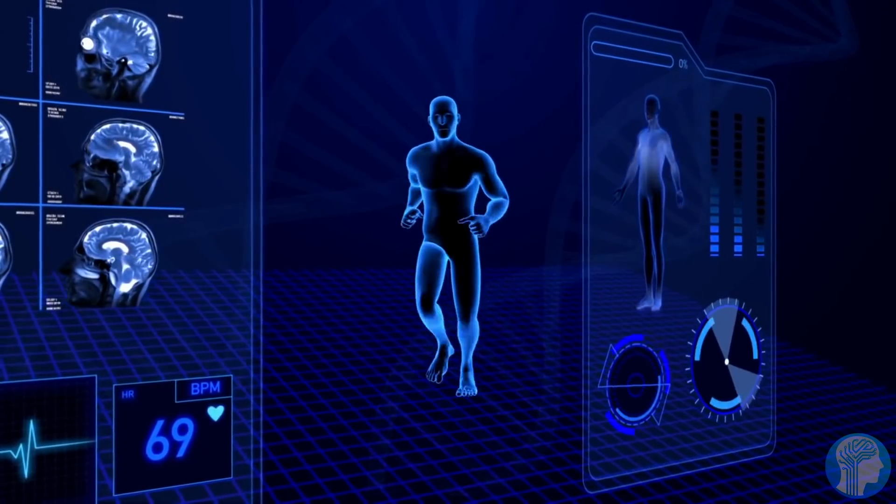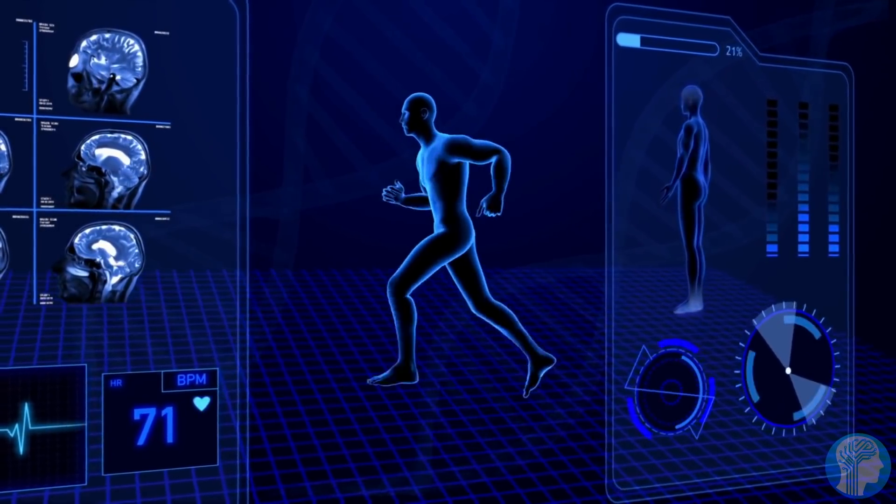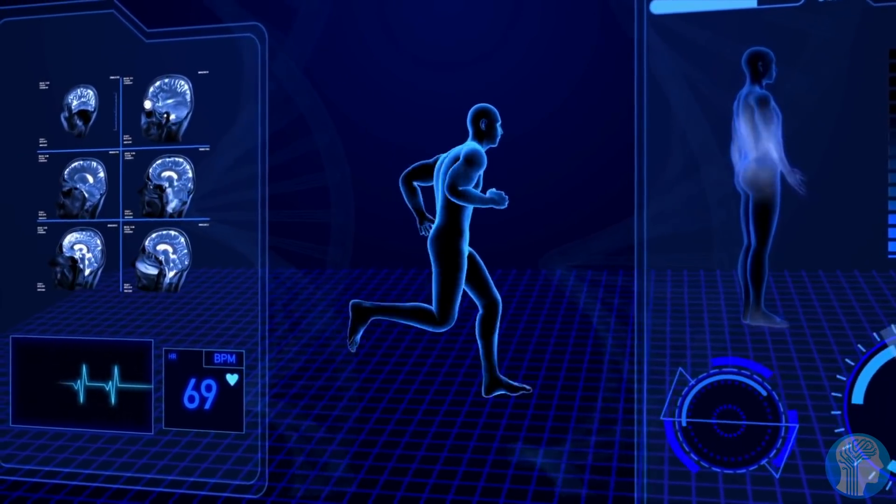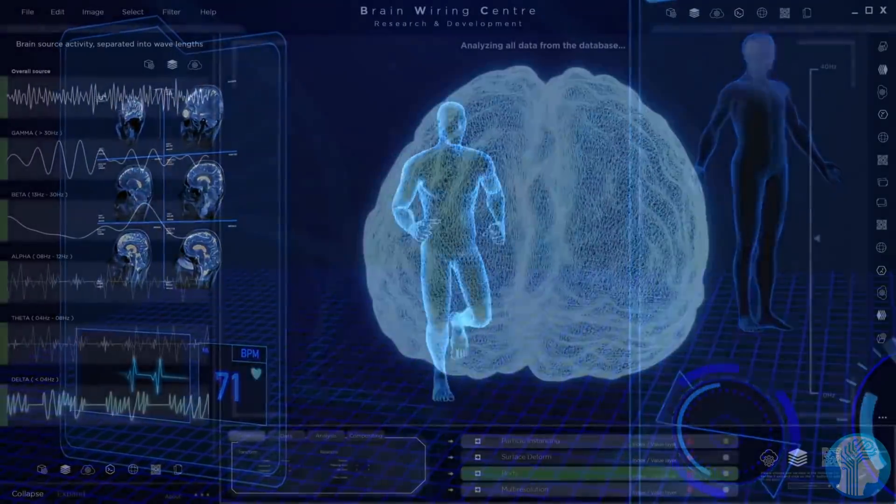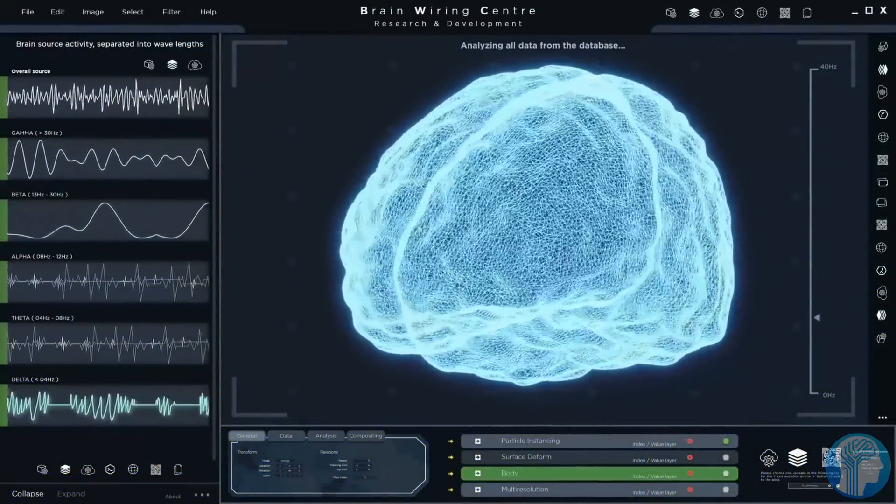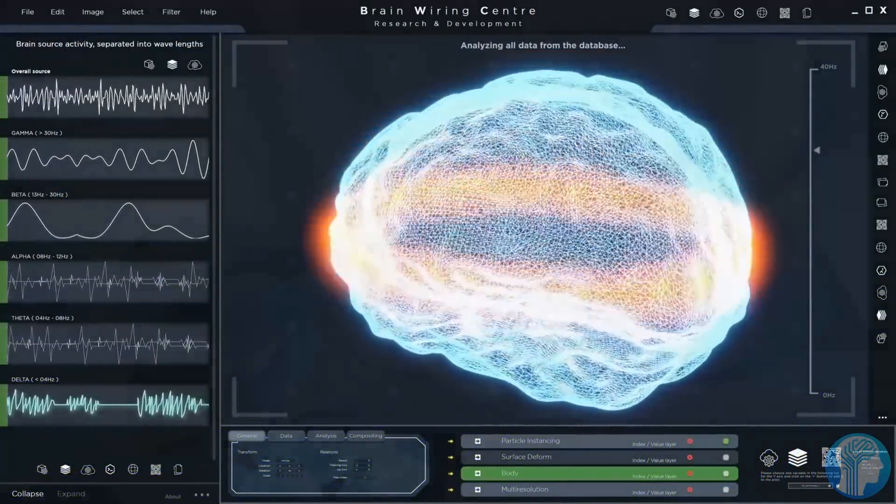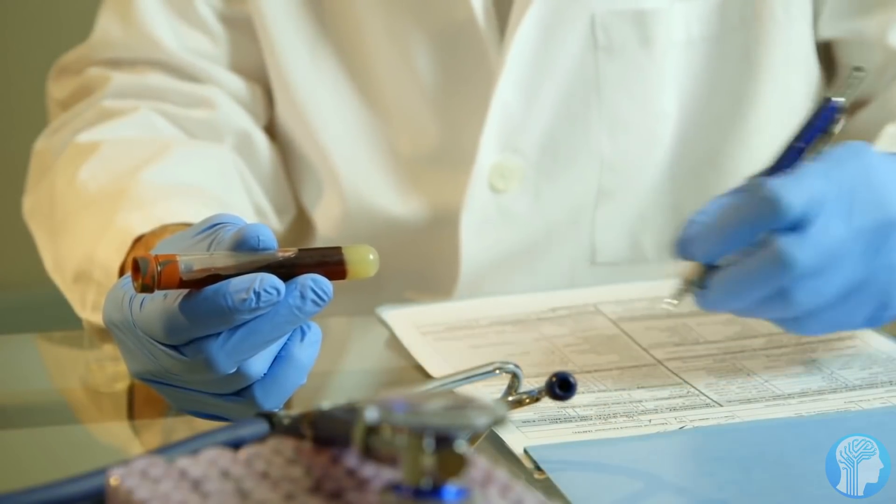They first established the subject's baseline calorie intake over a two-week period using a stringent procedure that quantifies how much energy they take in versus how much they burn. The subjects were subsequently followed for six months with demanding scientific testing of their body composition, such as muscle versus fat.